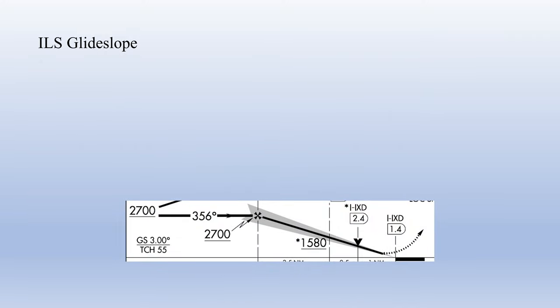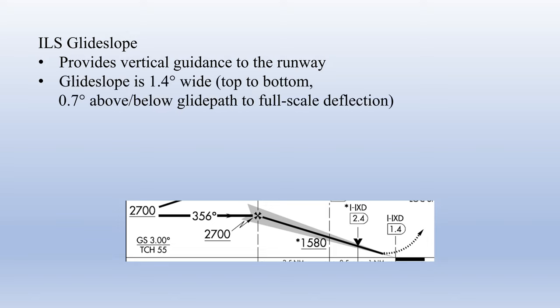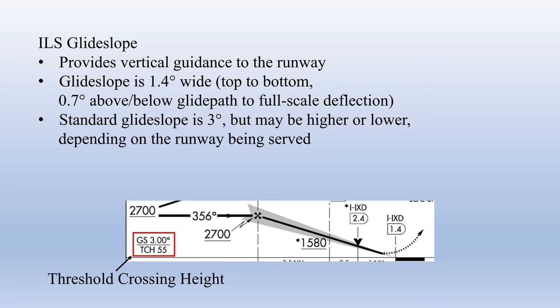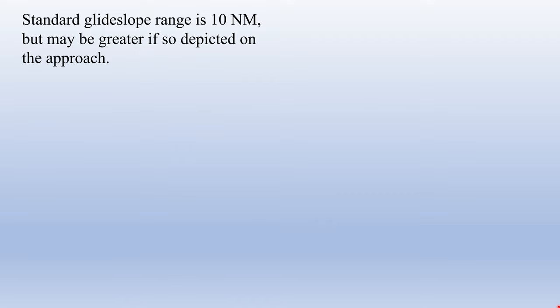Now let's talk about the ILS glide slope. The glide slope provides vertical guidance to the runway and is even more precise than the localizer, with a width of 1.4 degrees from top to bottom, or 0.7 degrees from the center to full-scale deflection. Most glide slopes are angled up from the ground at 3 degrees, though this can vary based on the specific runway and terrain. The angle of the glide slope is always published on the plan view of the chart. The range on a standard glide slope is 10 nautical miles, but may be greater if depicted on the chart.